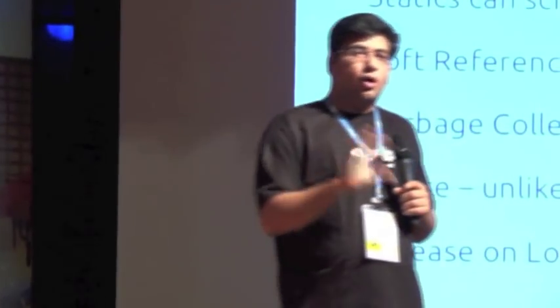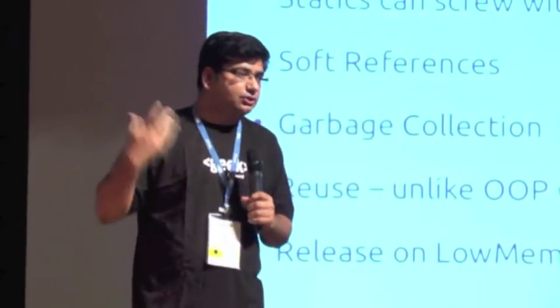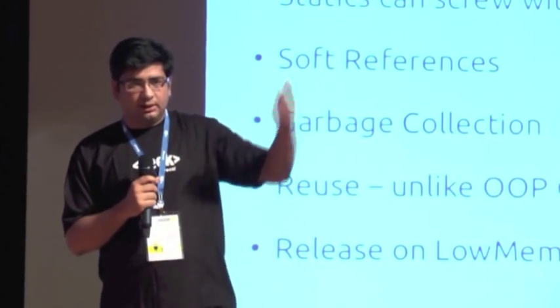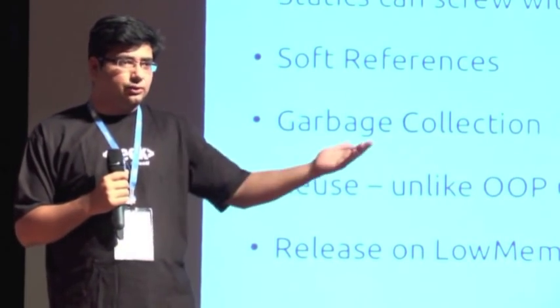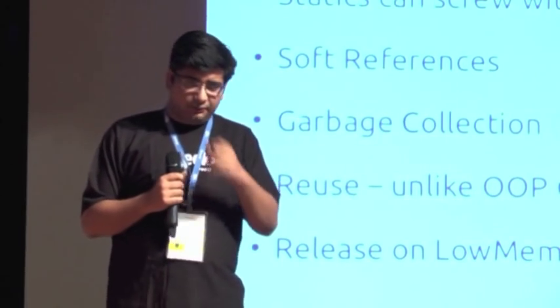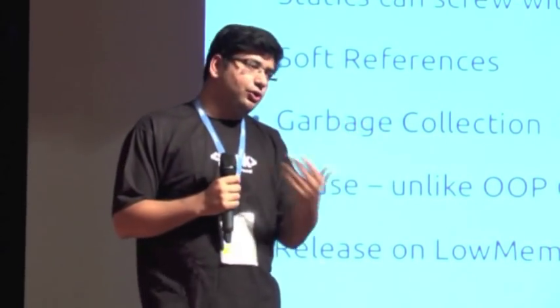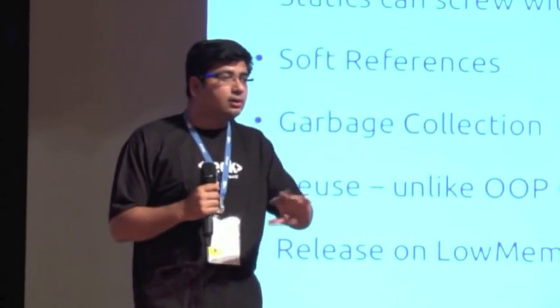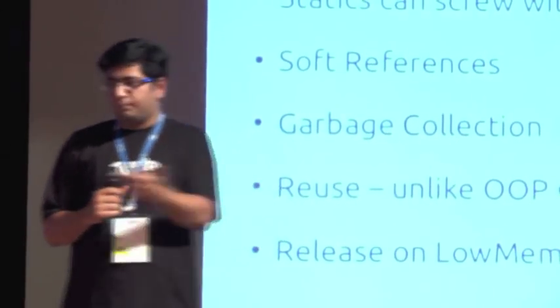In the onLowMemory method, if you release memory like bitmaps and images that you're using, there's a likelihood your process will not be killed and collected. People don't actively use that, so it's not very easy to use. Typically you won't end up having too much to release anyway, but you could release bitmaps and things like that. So that was memory.